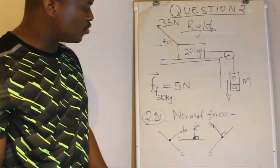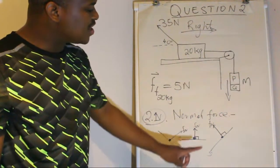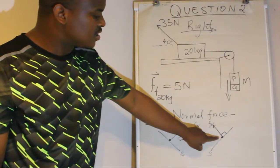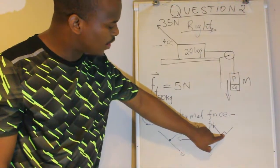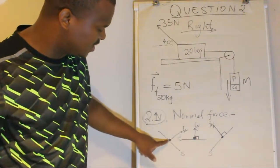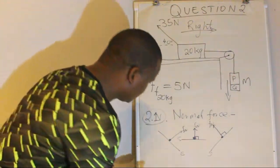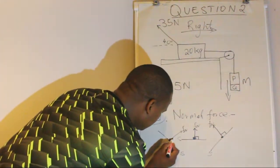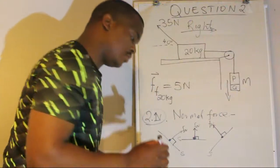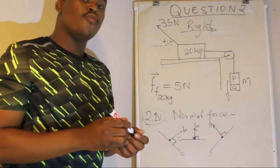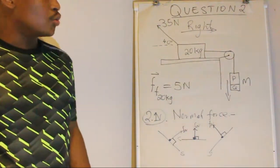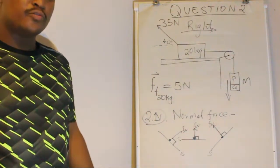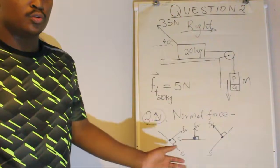So the normal force is the force exerted by the surface on an object placed on the surface, and that force is always perpendicular — orthogonal — to the surface, meaning it always forms 90 degrees. The surface will never exert a force that is not perpendicular to it. That's question 2.1, and now we move to question 2.2.